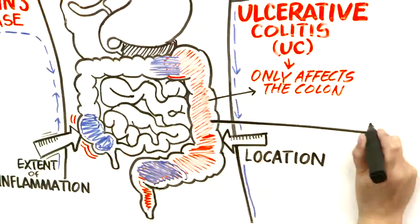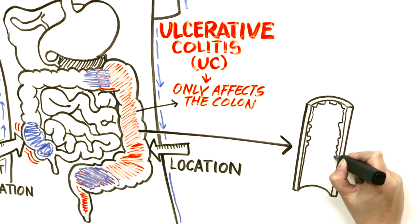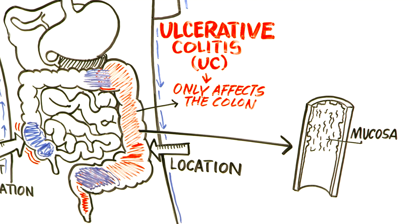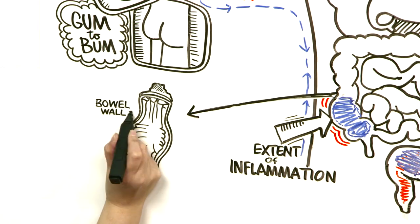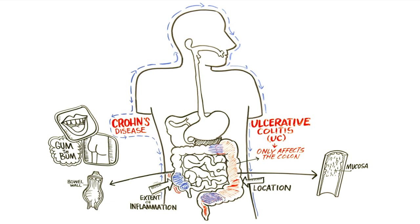In ulcerative colitis inflammation only involves the inner lining or what we call the mucosa while in Crohn's disease inflammation can extend right through the entire thickness of the bowel wall to the outermost layer of the digestive tract. These differences lead to different outcomes and different treatments which I'll get to later.